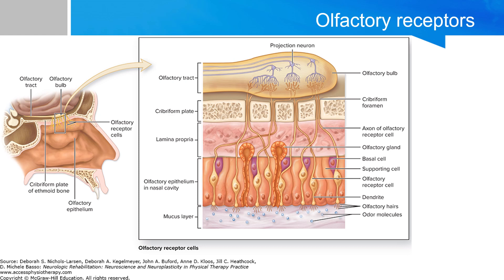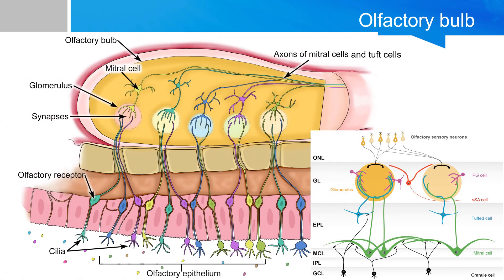Underneath the epithelium, you have a layer called the lamina propria, which houses the mucus-secreting cells — the olfactory glands. The olfactory receptor cells send their axons through the cribriform plate of the ethmoid bone into the olfactory bulb, where they synapse with the secondary neurons. The primary neurons are the olfactory receptor cells, and the secondary neurons are called the mitral and tuft cells in the olfactory bulb. As the olfactory sensory neurons enter the olfactory bulb, their axons synapse and form a spherical structure called the glomerulus.